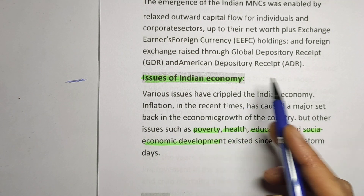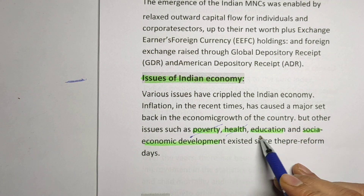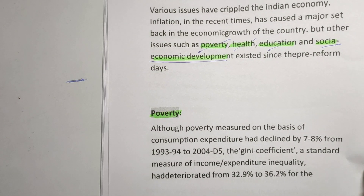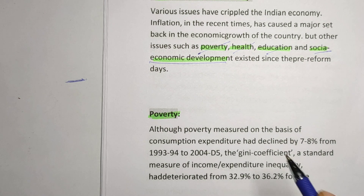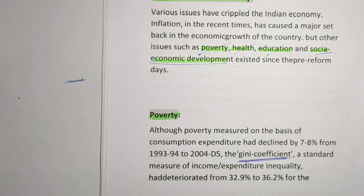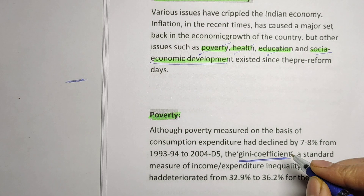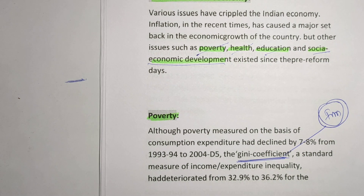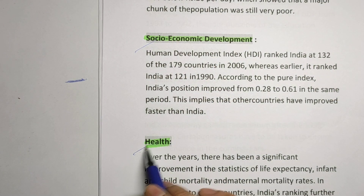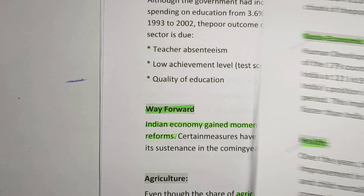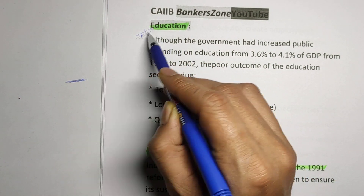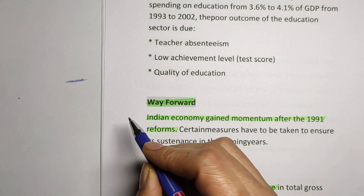What are the main issues of the Indian economy? We are having issues of poverty, health, education, and socio-economic development. The important thing is poverty — poverty is measured by the Gini Coefficient, and the Gini Coefficient is used for the measurement of poverty. That is very important for MCQ purposes. We also have problems of socio-economic development, health issues, and education as a big challenge.